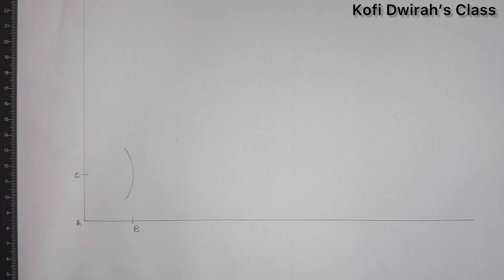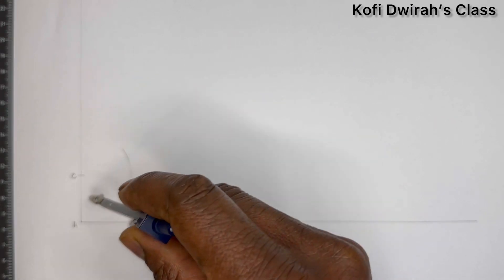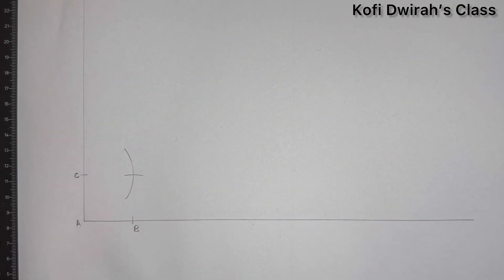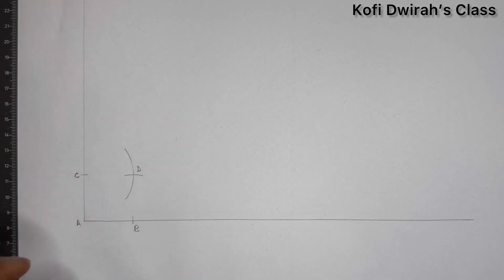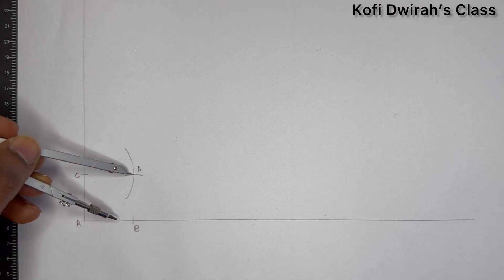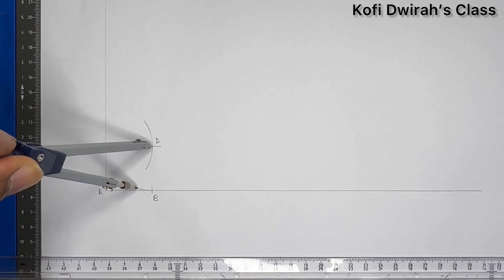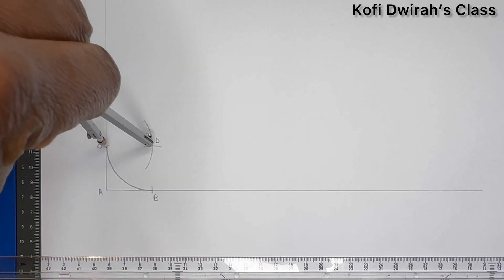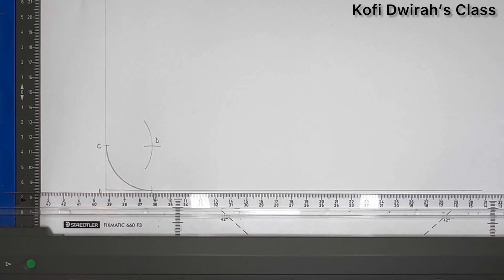You draw another arc like this. Then at point B, with the same radius, you draw another arc. So we have this point as point D. So now let's draw this.